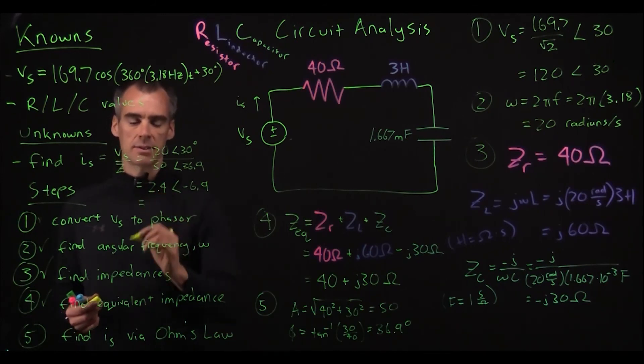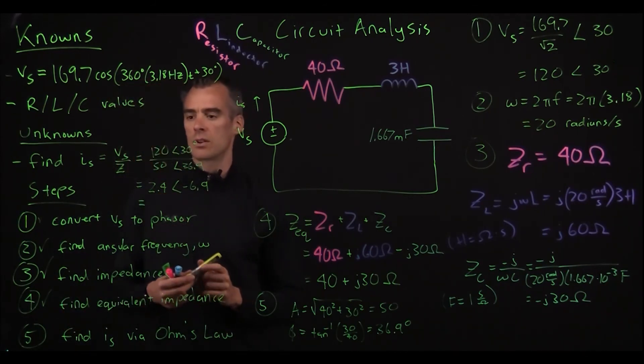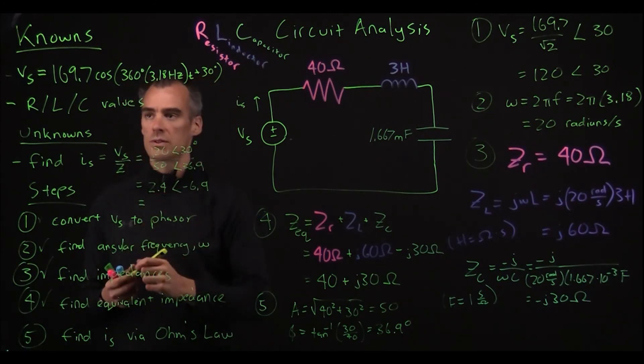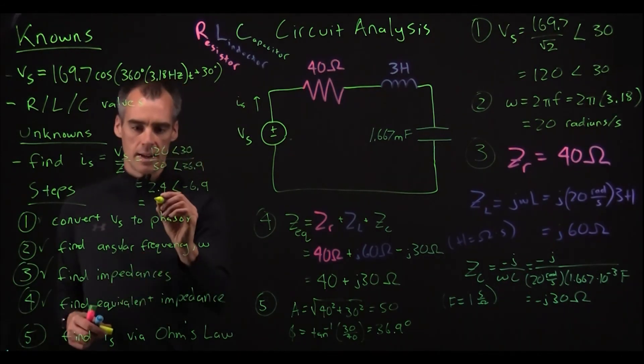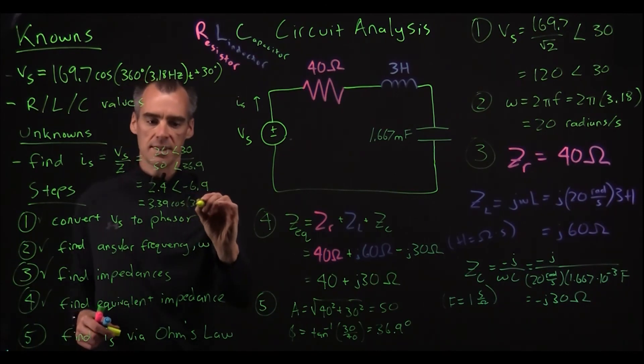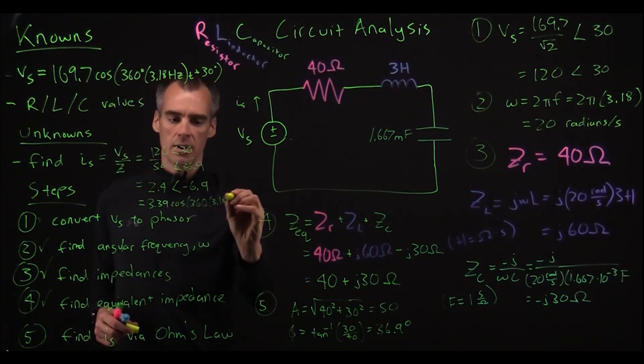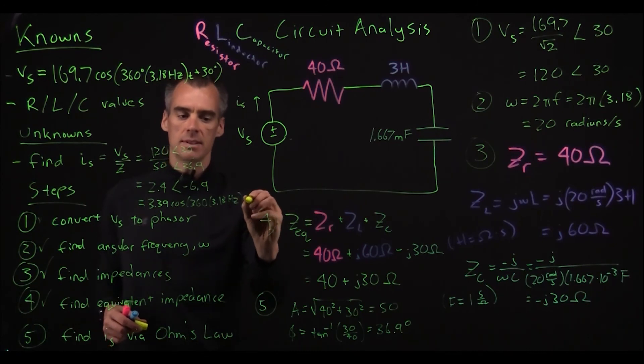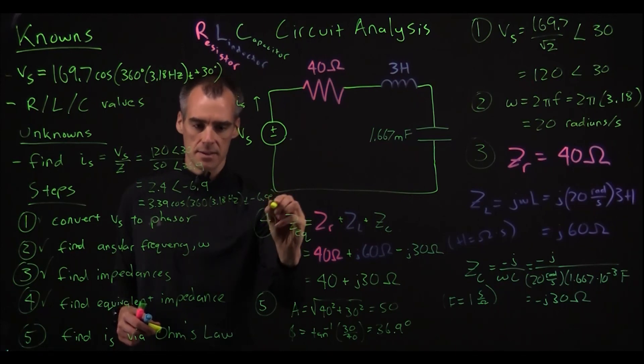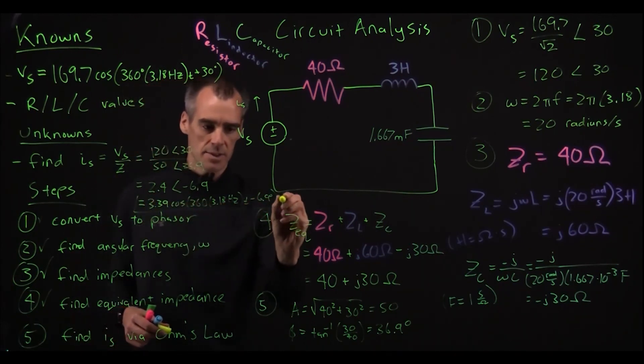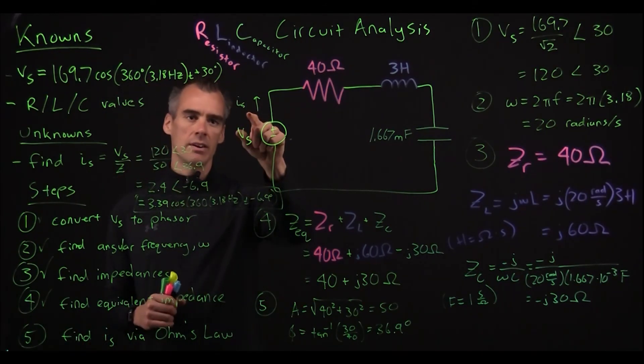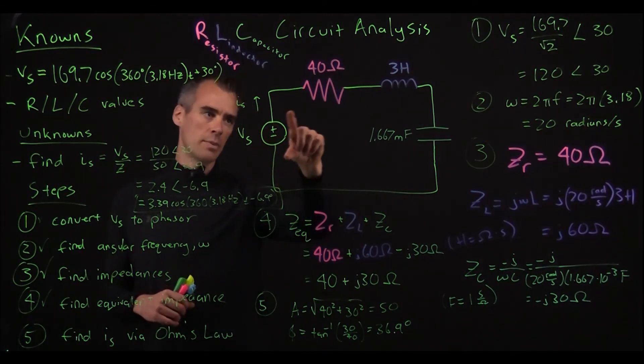So that is our phasor for our Is and if we go ahead and just finish this off, let's put that back into this proper form up here. So this is our RMS, so we're going to want to multiply this by the square root of 2. So if we do that, we end up with 3.39 times the cosine of 360 times 3.18 hertz t minus our phase, which is 6.9 degrees. And that is our final answer, which has got to be small here because I ran out of space.